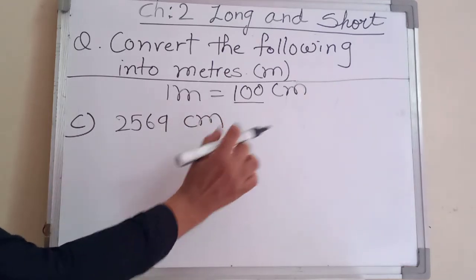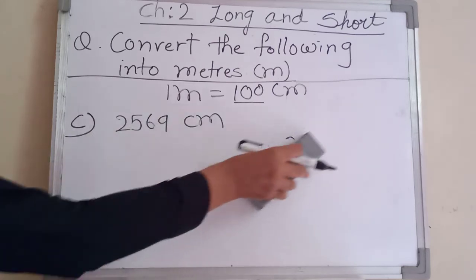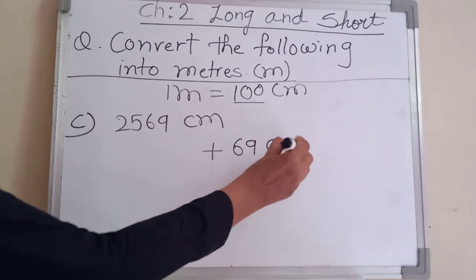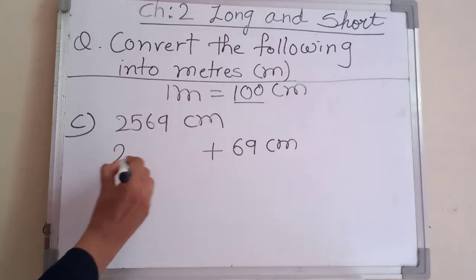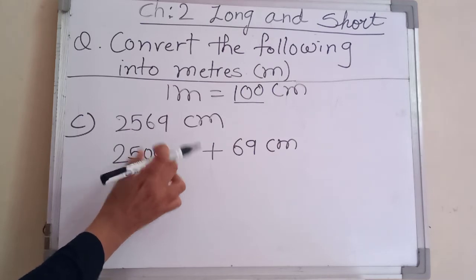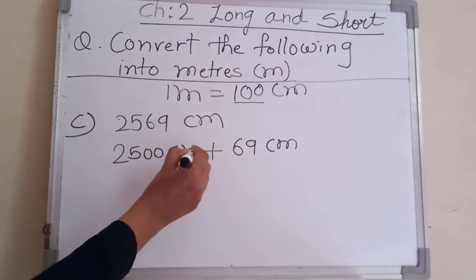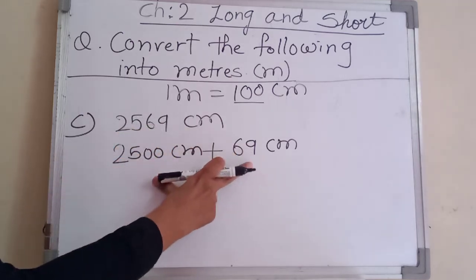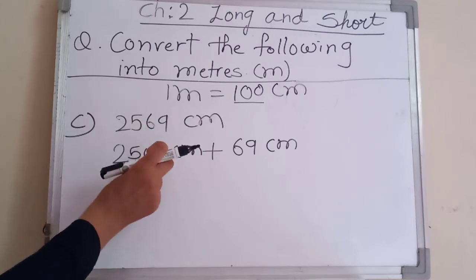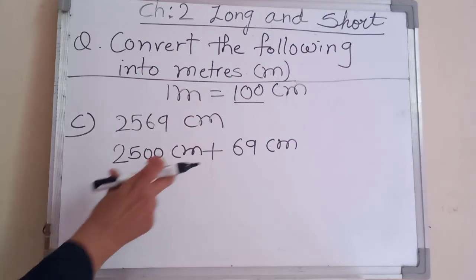Since hundred has two zeros, we need to split this number first. We separate sixty nine centimeter and replace those digits with zeros, making it two thousand five hundred centimeter plus sixty nine centimeter. When added together that equals two thousand five hundred sixty nine centimeter. Both parts remain in centimeter.